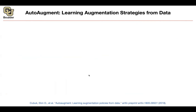We can move on. So far, what we have been doing was looking for better architectures. Now, this is one of the papers that is thinking outside of the box. Can you actually search for a better data augmentation process and automate that? So that's the big picture.